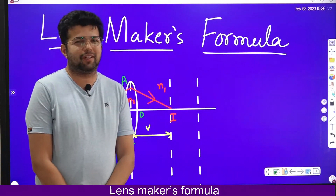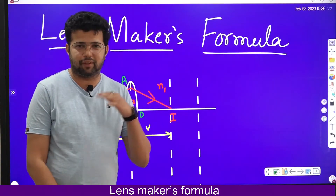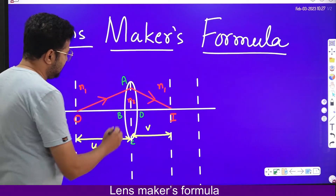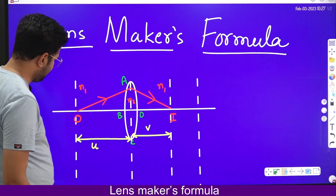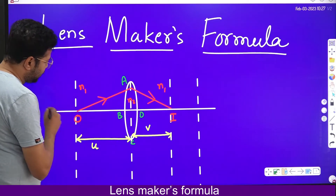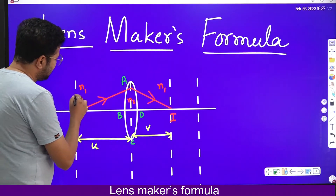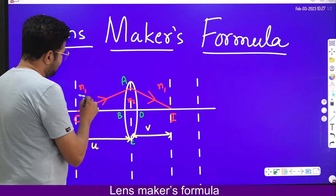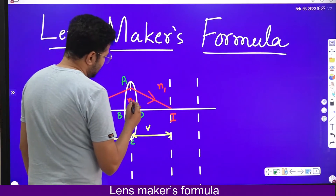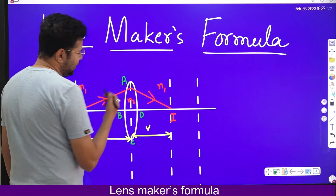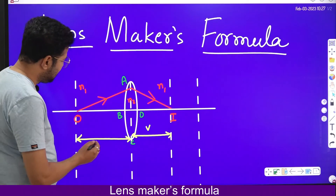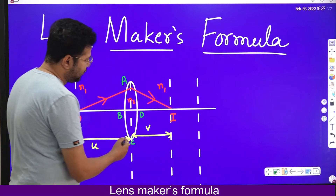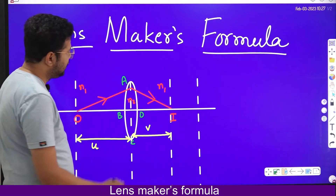Hello dear students, now we are going to derive the lens maker's formula, which is very important. We have considered a thin convex lens and one point object. The object is placed in a rarer medium of refractive index N1, the lens is the denser medium of refractive index N2, object distance is taken as U, and image distance as V.